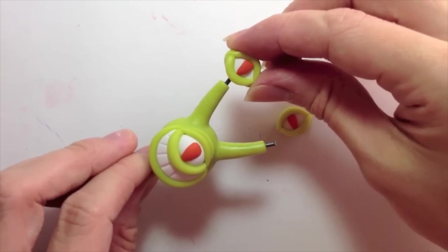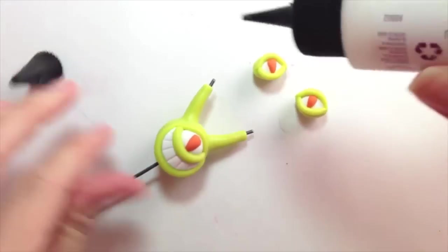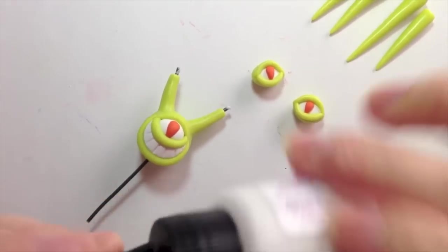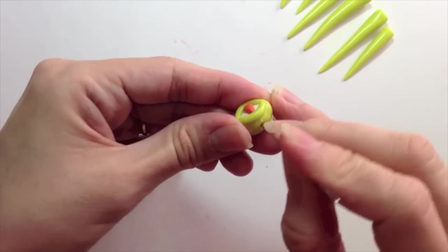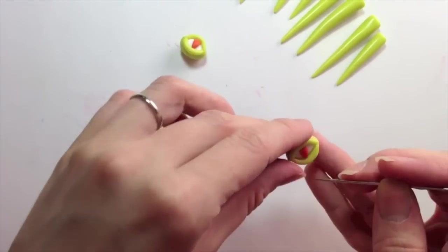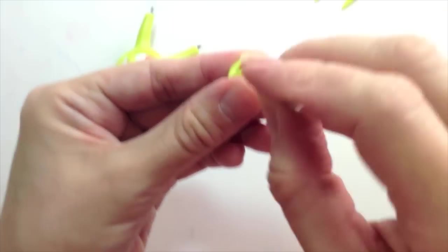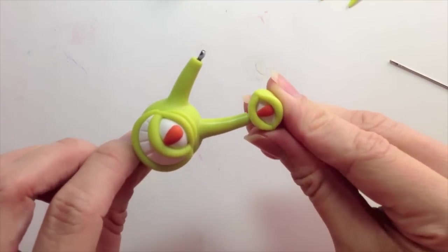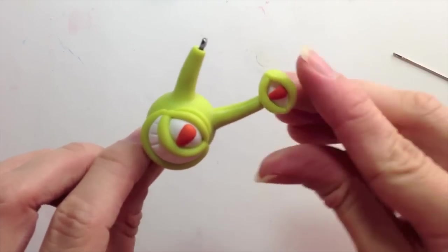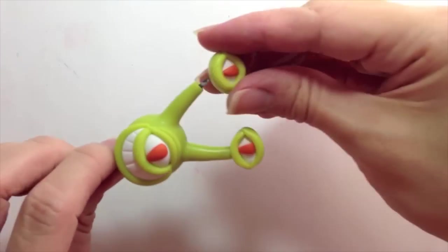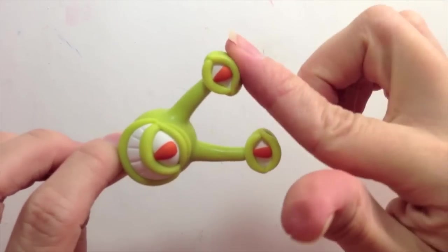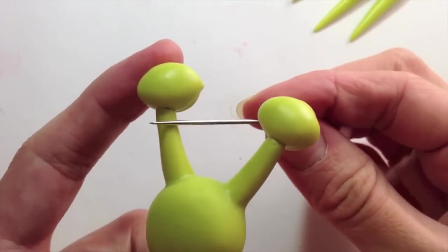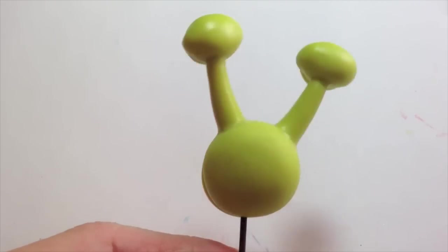So the eyelids are all on. Next it's time to attach them to the head. So I'll add a little bit of translucent liquid polyclay. Not too much or it'll squish out the edge. And I will make a little mark so that it's easier to put together. And next I'll just smooth this seam. The eyes are all attached now.